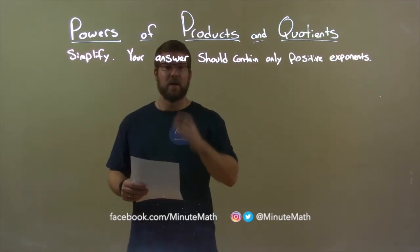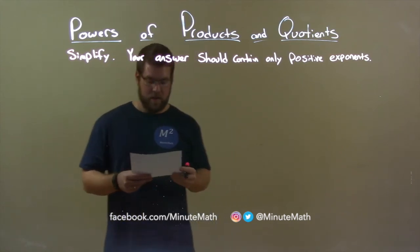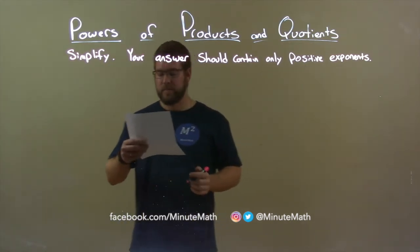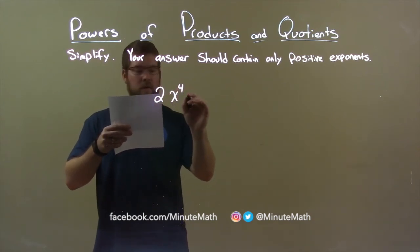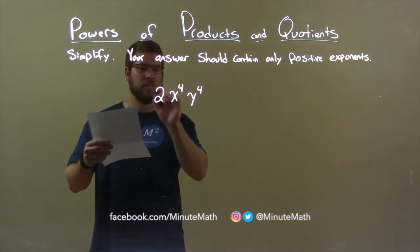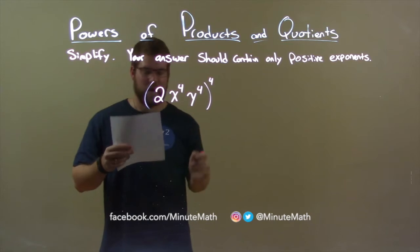We're going to simplify, and your answer should contain only positive exponents. So, if I was given this problem: 2x to the fourth power, y to the fourth power, and all of that is raised, you can guess it, to the fourth power.